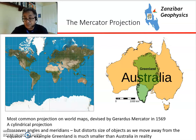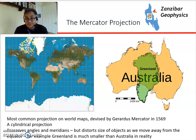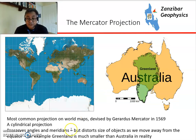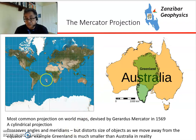You can see that Greenland appears massive in the Mercator projection, but actually it isn't. When you put Greenland over Australia, you can see its real size — it's still fairly big, but about a third of Australia's size. Mercator preserves angles and meridians, and it's generally what we're used to.